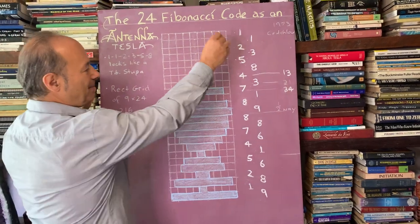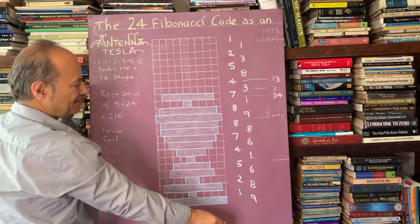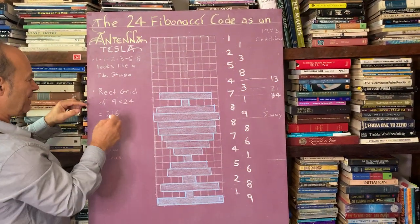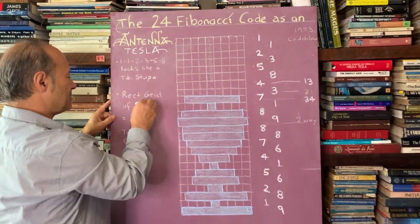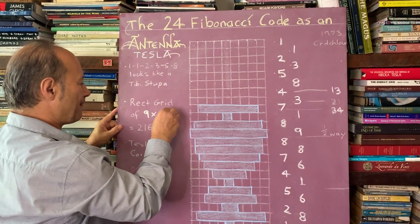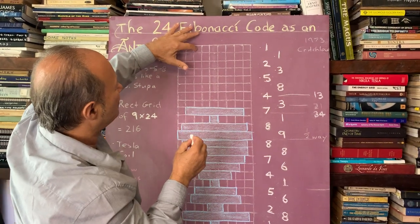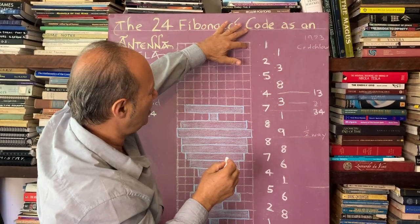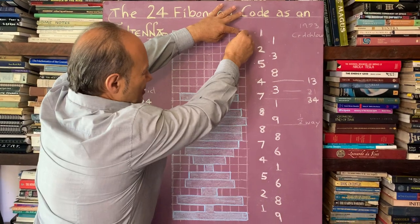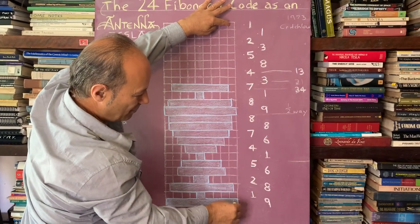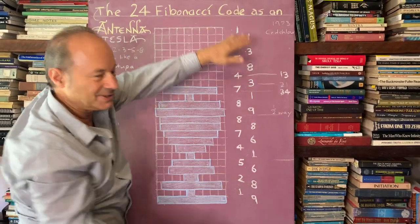So to turn the numbers into art, I need to create a grid called nine times 24. So this distance along here is one, two, three, four, five, six, seven, eight, nine. And there's obviously 24 horizontal rows because we've got 24 numbers in the code.